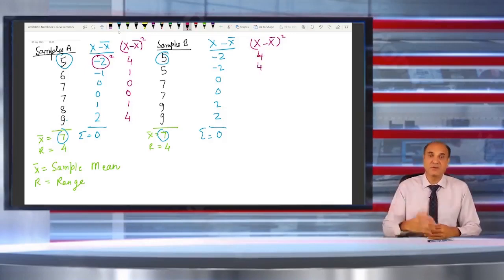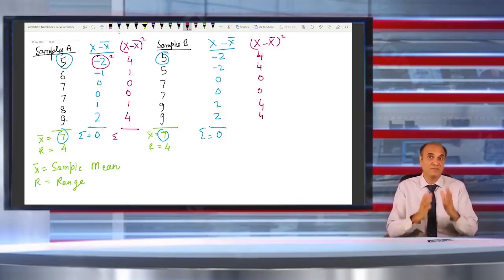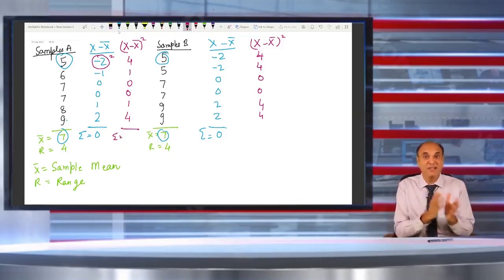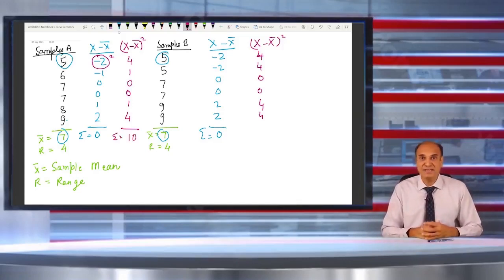And the second case, that is minus 2 multiplied by minus 2, is 4, then again 4, and then 0, 0, 4, and 4. Now if I take the sum total of all the squares of the distances, I will find that A is 10 and B is 16.